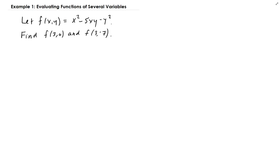In this example, I'm going to evaluate the given functions at the following points. So we have f of x, y equals to x squared minus 5xy minus y squared.